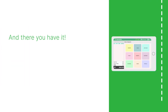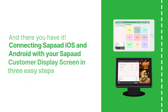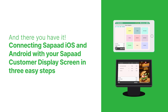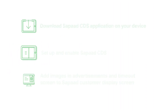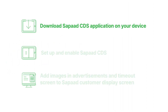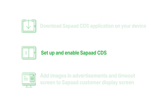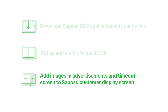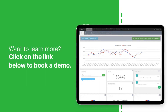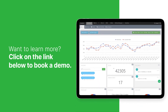And there you have it — connecting SAPAD iOS and Android with your SAPAD Customer Display Screen in 3 easy steps. First, download the SAPAD CDS application on your device. Second, set up and enable SAPAD CDS. And third, add images for advertisements and timeout screens to your SAPAD Customer Display Screen. Want to learn more? Click on the link below to book a demo.